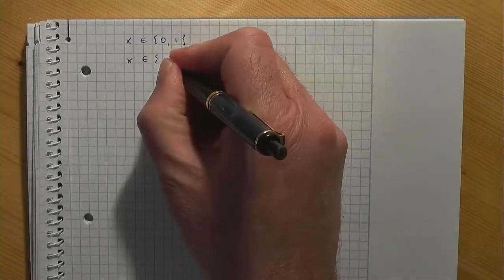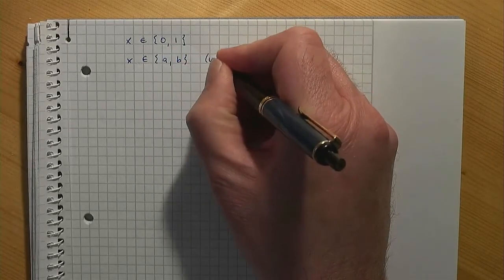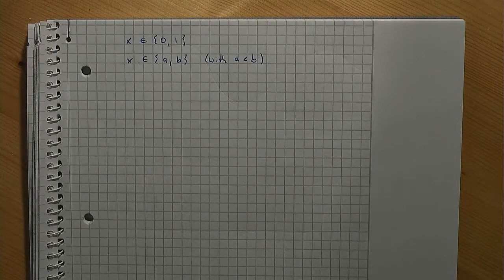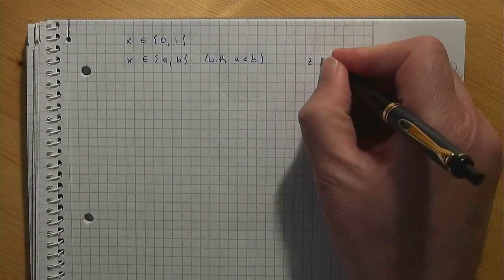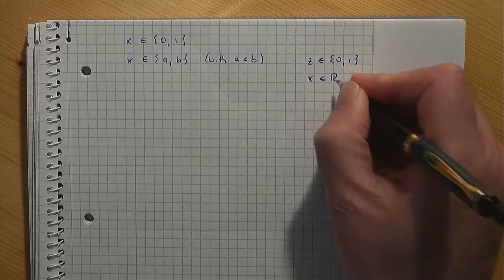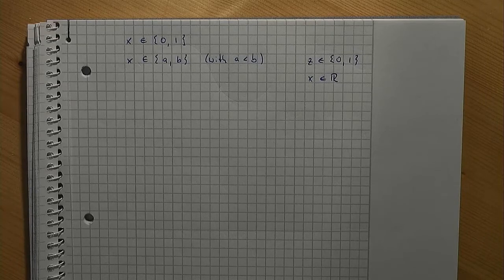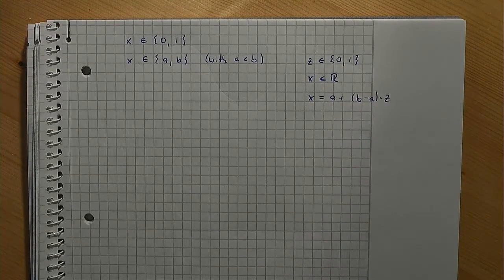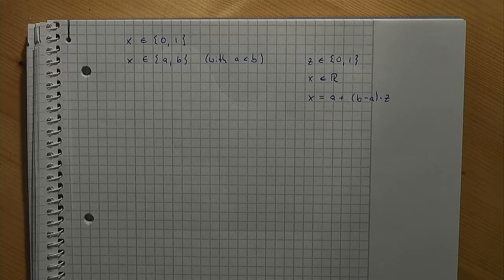If you like to have two other values, say a and b, where a is smaller than b — that is, you like to define x as element of {a, b} with a smaller than b — you could define z as element of {0, 1} and x as the real value, and add a constraint x equals a plus (b minus a) times z. In other words, assuming binary decision variables to be either 0 or 1 is without loss of generality.